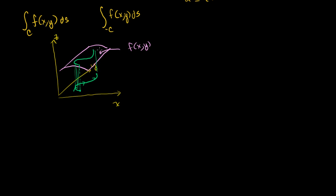Now, if we take the same integral but over the reverse curve — instead of going in that direction, we're going in the opposite direction — the idea is still the same. It seems that in either case, no matter what direction I'm going, I'm going to try to figure out the area of this curved piece of paper. So my intuition tells me that either of these is going to give me the area of this curved piece of paper. So maybe they should be equal to each other. I haven't proved anything very rigorously yet, but it seems they should be equal.